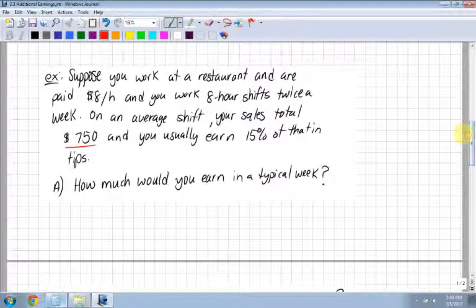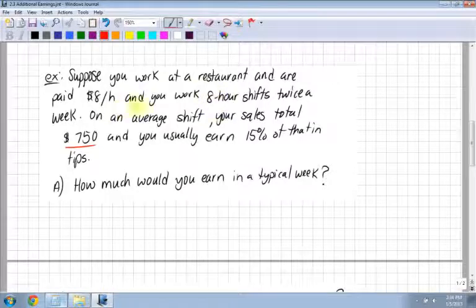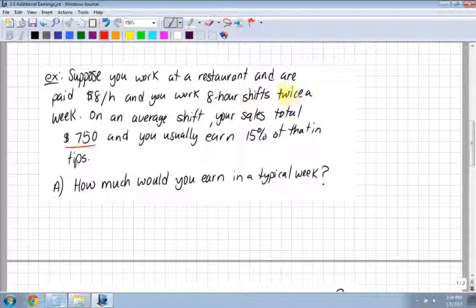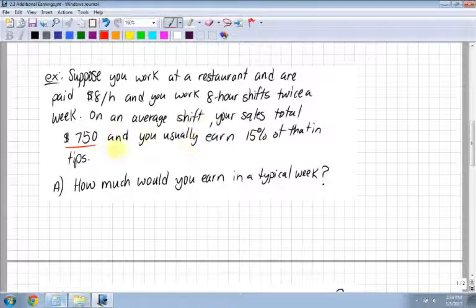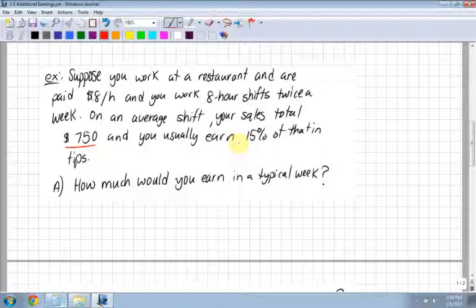Suppose you work at a restaurant and are paid $8 an hour, and you work 8-hour shifts twice a week. On an average shift, your sales total $750, and you usually earn 15% of that in tips.